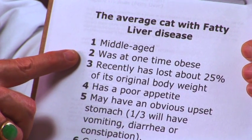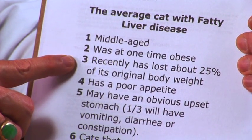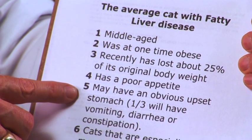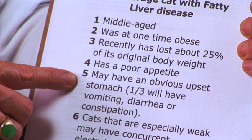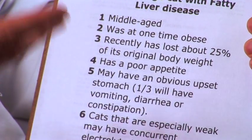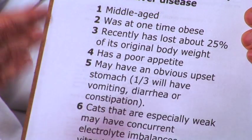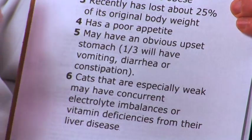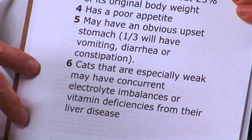The cat was obese and recently lost maybe up to 25% of its weight for some reason. This weight loss itself isn't necessarily a liver problem initially, but it triggers the liver problem. Now the cat has a poor appetite, and about a third of the time it will also have vomiting or diarrhea. The cat becomes weak from not eating and not having a proper diet.